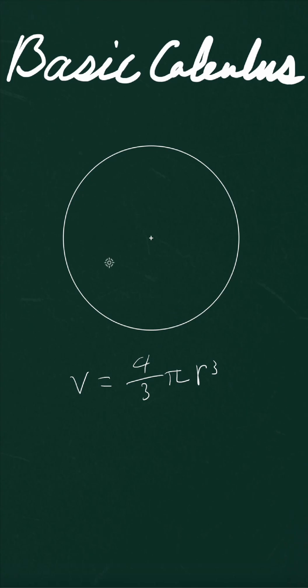Hi guys, welcome back to Math with James. Today we have to prove this formula for the volume of a sphere: V equals 4 over 3 times pi times r cubed.